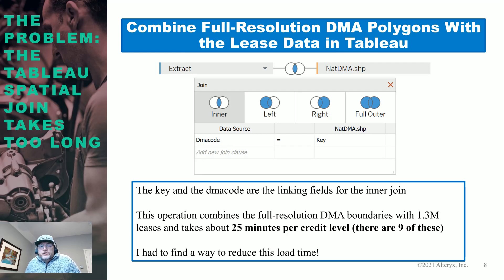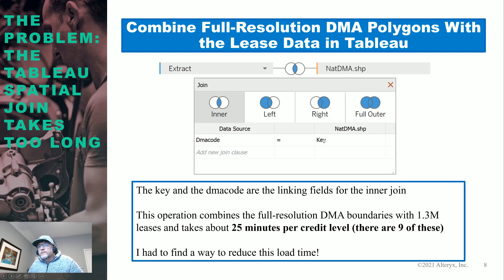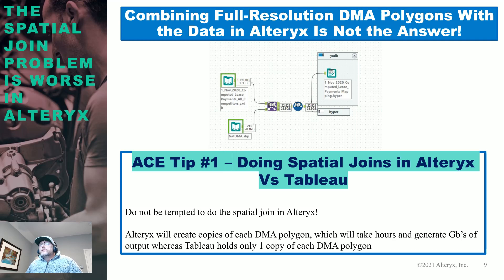Initially, I had data coming in through a Hyper extract, and then I did an inner join with the national DMA shapefiles with the DMA code on the left side being equal to the key on the right side. That took 25 minutes per credit level. After waiting for a couple of those, I knew there had to be a better way.